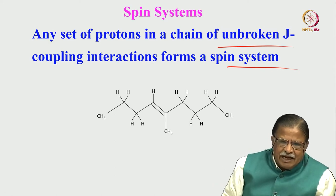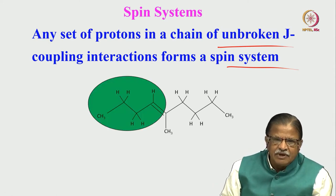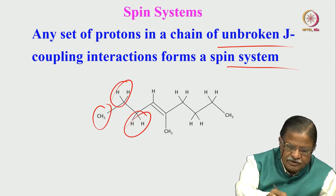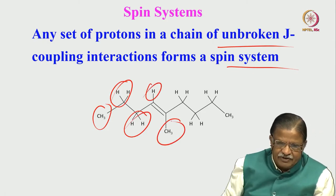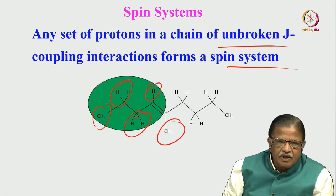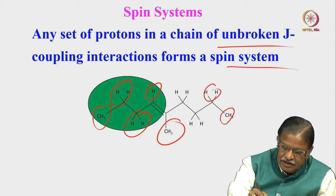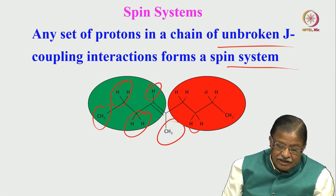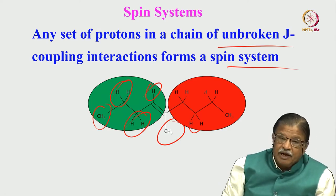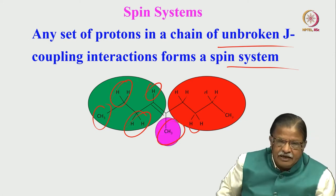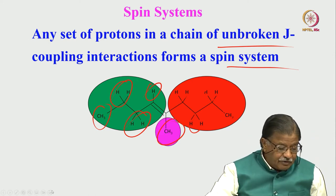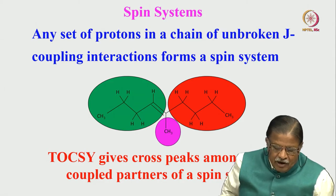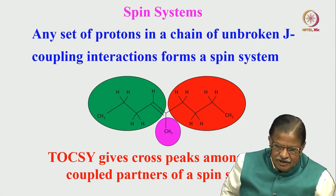Take a hypothetical molecule as an example. CH3 is coupled to CH2, which is coupled to another CH2, and that is coupled to another CH2 — this forms one spin system. On the other side, CH3 is coupled to CH2, coupled to CH2, and to CH2, forming another coupled spin system. Assuming no long range couplings, a lone CH3 forms an isolated spin system by itself. So in this given molecule there are three coupled spin systems. TOCSY gives cross peaks among all the spins of a coupled spin system in one experiment.